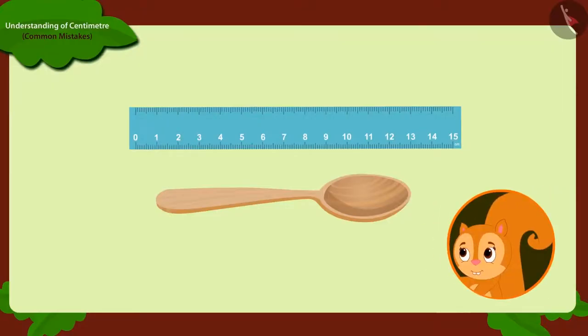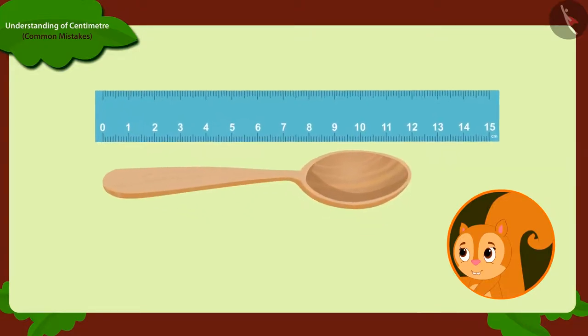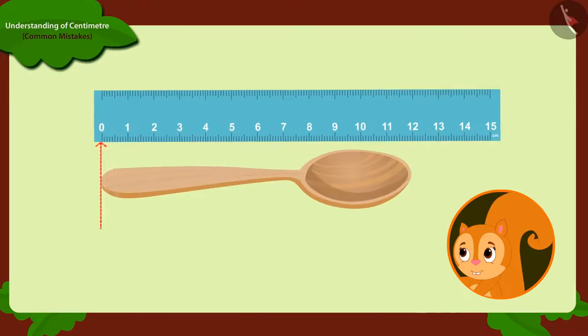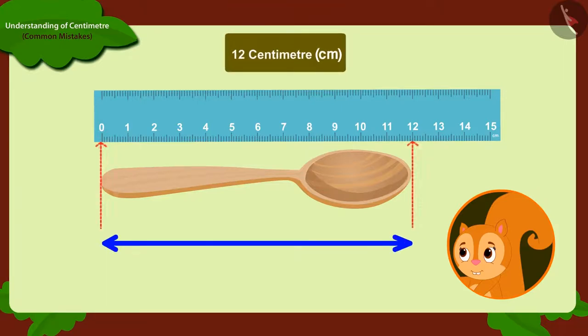Chanda realized her mistake and measured the spoon from number 0. And this time, she got the length of the spoon exactly 12 centimeters as before.